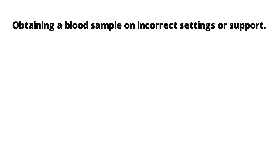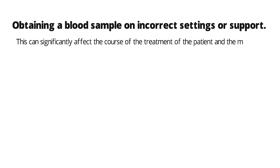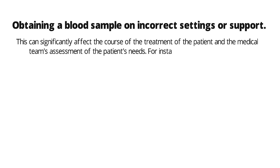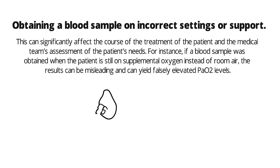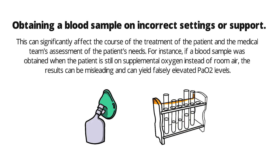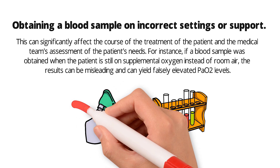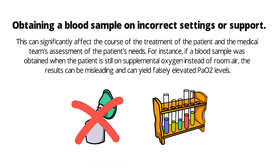Obtaining a blood sample on incorrect settings or support. This can significantly affect the course of treatment of the patient and the medical team's assessment of the patient's needs. For instance, if a blood sample was obtained when the patient is still on supplemental oxygen instead of room air, the results can be misleading and can yield falsely elevated PaO2 levels.